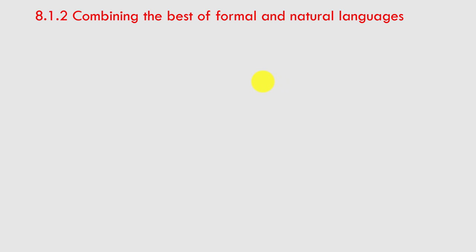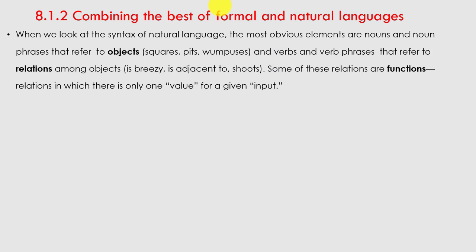Next is combining the best of formal and natural languages. When you look at the syntax of natural language, the most obvious elements are nouns and noun phrases that refer to objects — for example squares, pits, wumpuses — and verbs and verb phrases that refer to relations among objects, such as 'is breezy' or 'is adjacent to.' Some of these relations are functions, that is, relations in which there is only one value for a given input.